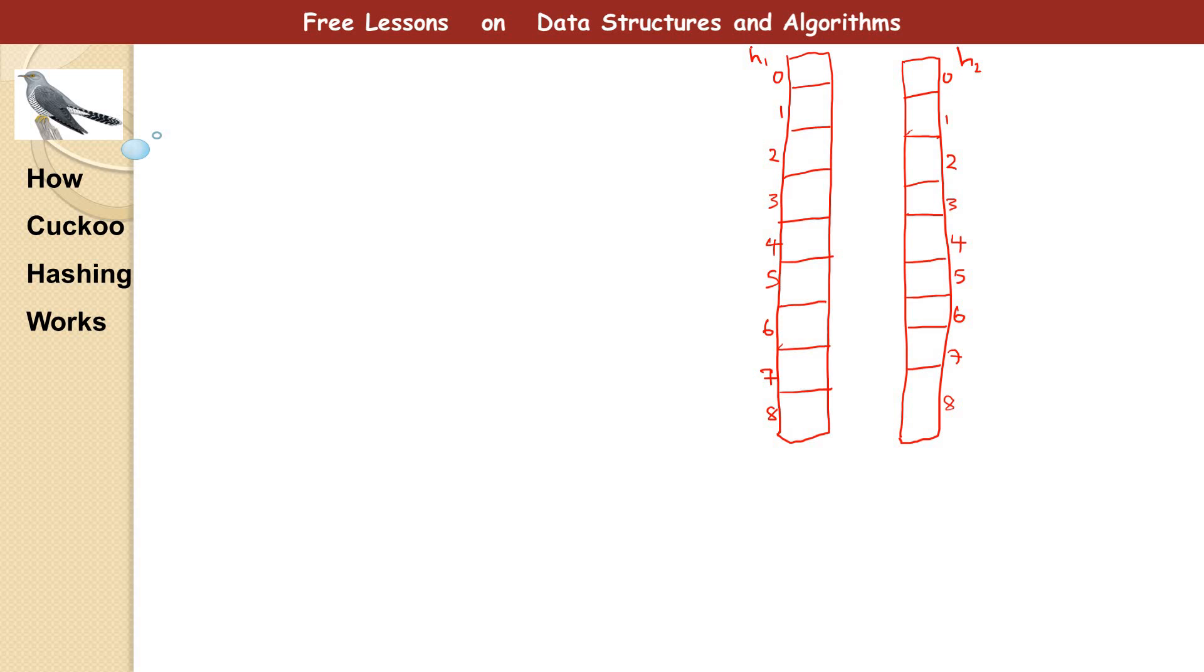So whatever is the output of the hash function h1 goes into table 1. And whatever is the output of the hash function h2 goes into table 2. Also, we are going to be looking at cuckoo graph.